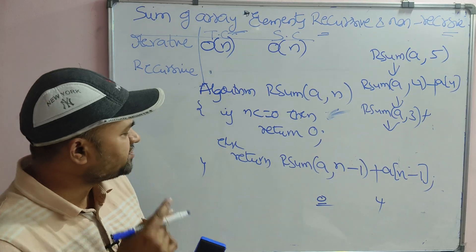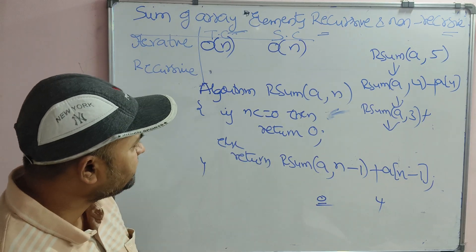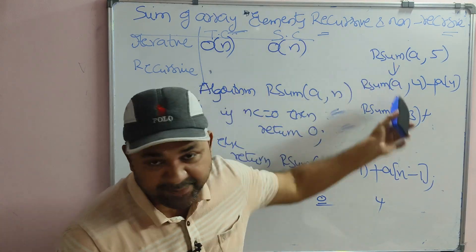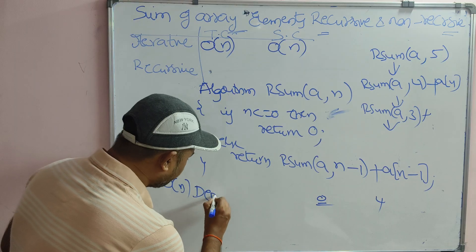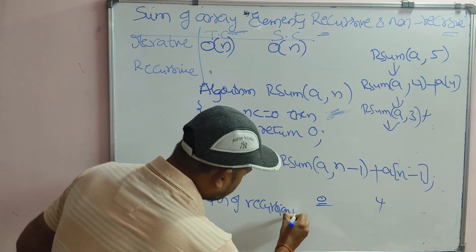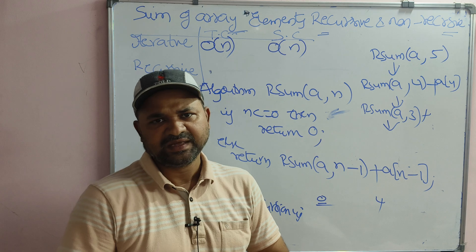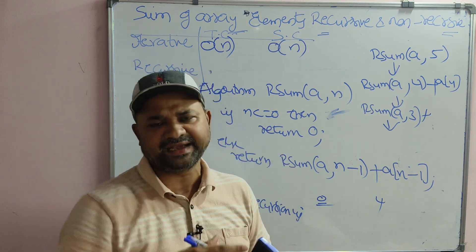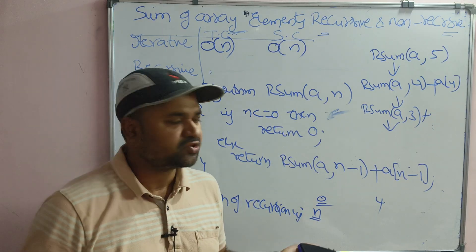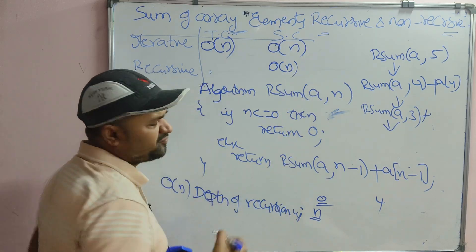Now let us focus on space complexity and time complexity. The space complexity of this algorithm is order of N. The reason is the depth of the recursion. If N is 5, then we are calling that function 5 times again and again. So the depth of the recursion is N, and that is why the space complexity of this algorithm is order of N.